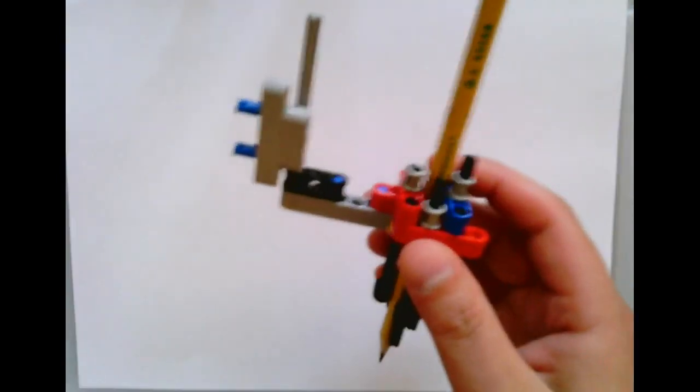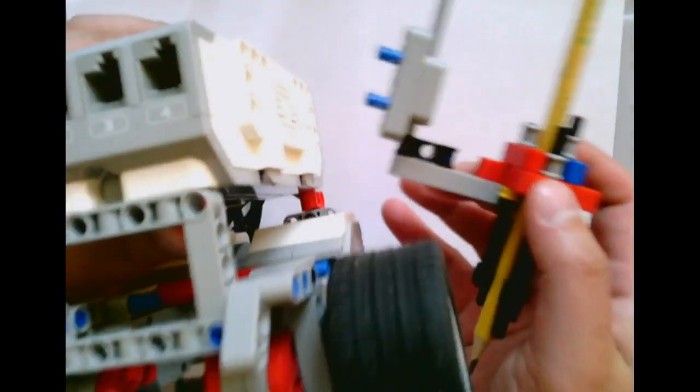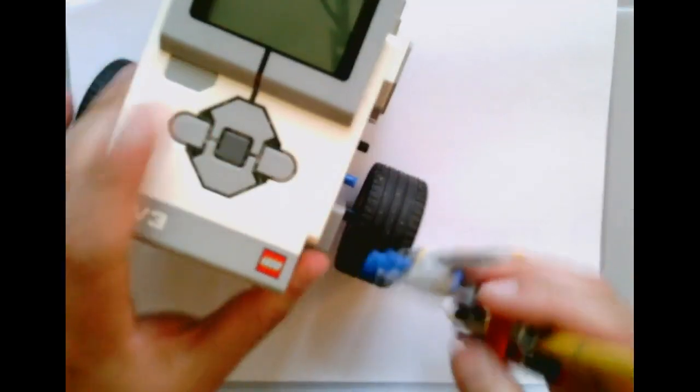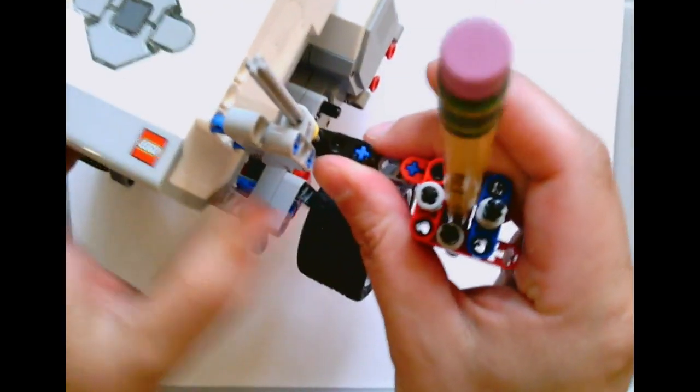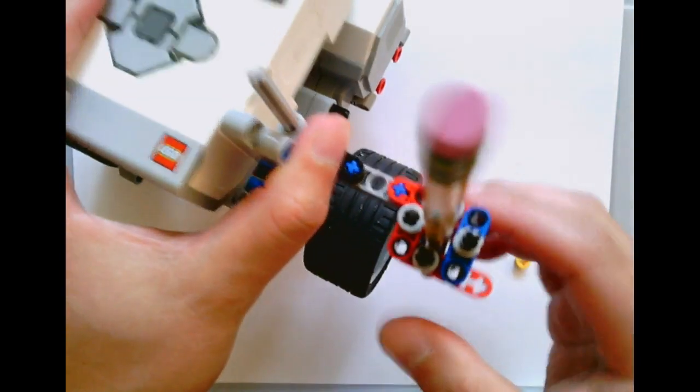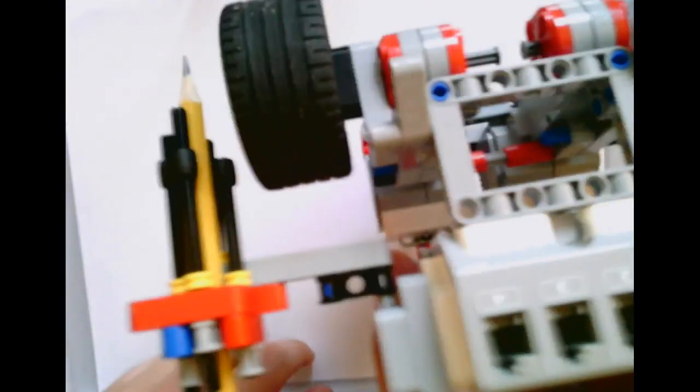So now that you have your pencil holder made, you take your EV3 robot and you connect it on the side like so. And you'll see that it will be a nice way to hold your pencil.